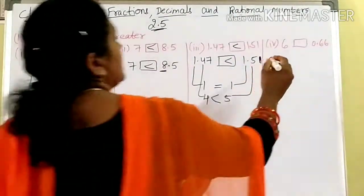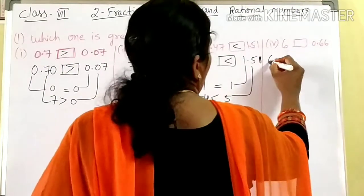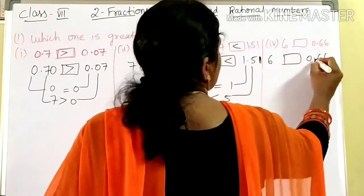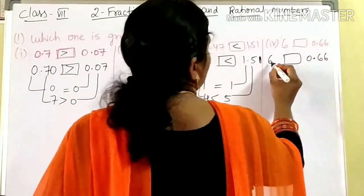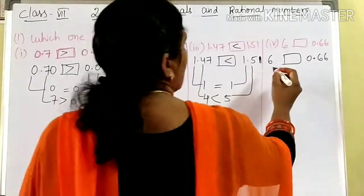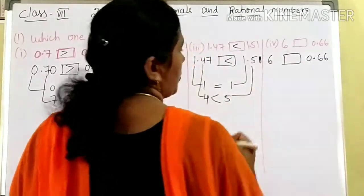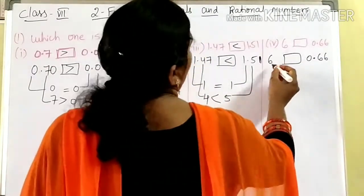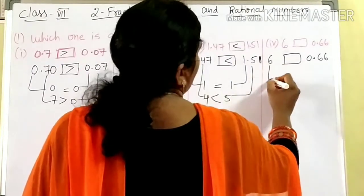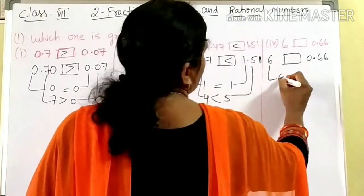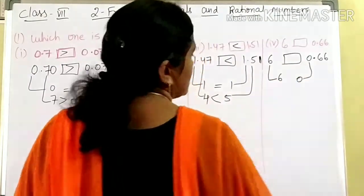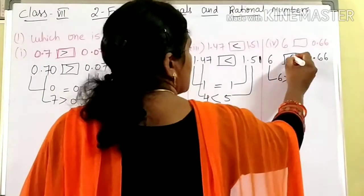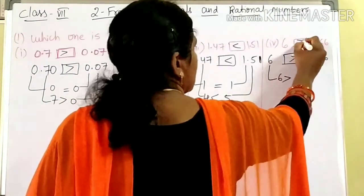Coming to here: 6 and 0.66. What is the whole part in 6? It is 6. 6 can be written as 6.000 — the value does not change. Here, 6; and coming to here, what is the whole part? 0. Which is greater? 6 is greater. So 6 is greater.